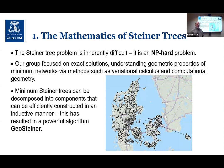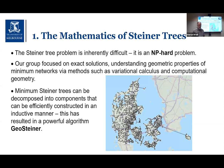With NP-hard problems, you can't find algorithms that scale nicely for all instances — as far as we know, there's no polynomial time algorithm that solves this. Because of this NP-hardness, such problems are often solved approximately using heuristics, but our group has focused on exact solutions and deeply understanding the geometric properties of these minimum networks through variational calculus and computational geometry.